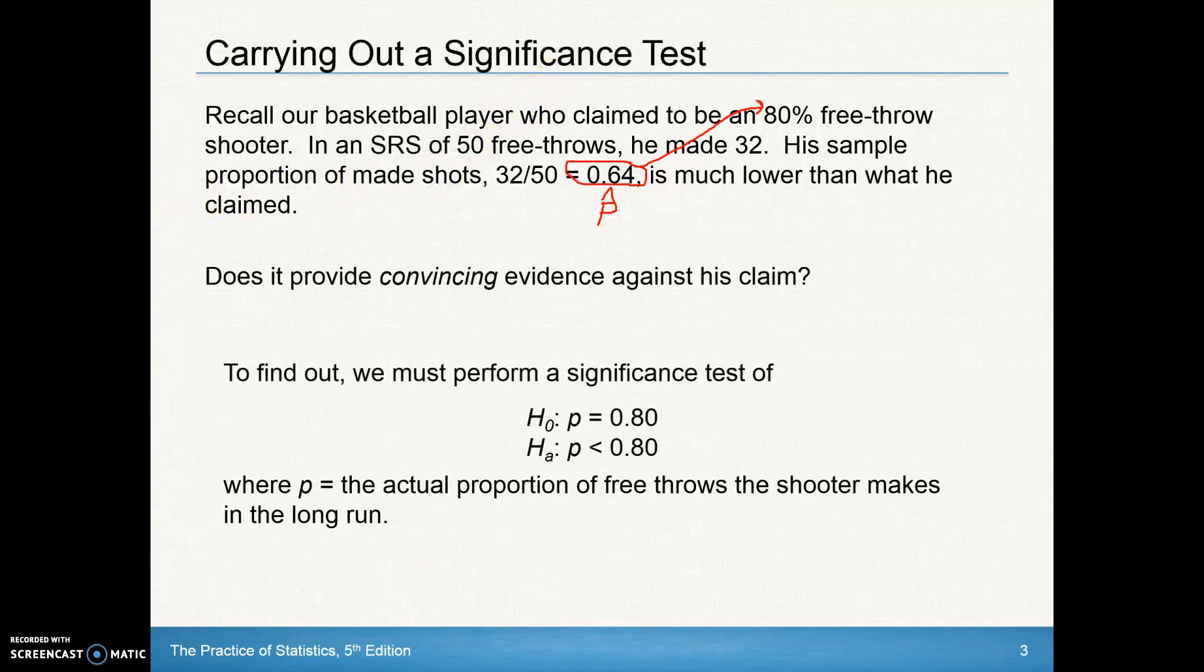Well to find out how we have to perform a significance test and remember again there are no hypothesis right here. Our null hypothesis right there always has to have the parameter equaling the value. We're thinking that is not as good and that's why we chose for the alternative to have less than.